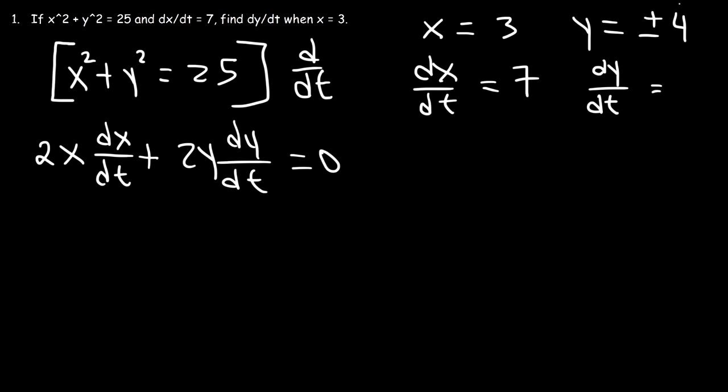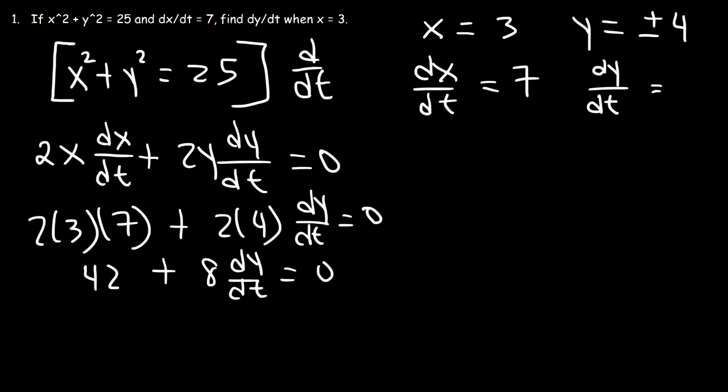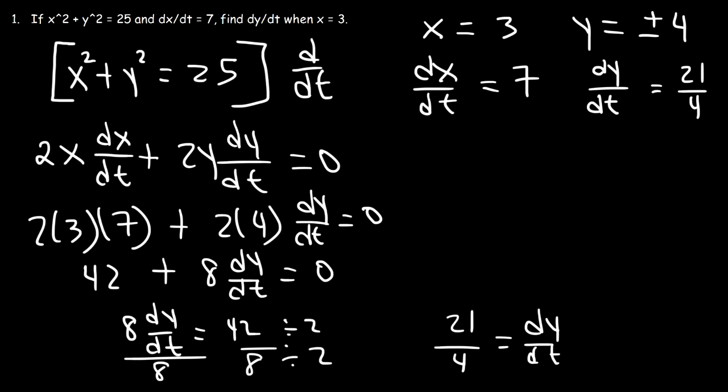Now, we can plug everything in into this equation and get the answer. Now, because there's two possible answers for y, let's try both. Let's try positive 4 for now. So x is 3, dx dt is 7, so that part won't change. y is going to be 4, and now let's see what dy dt is going to be. 2 times 3 is 6, and 6 times 7, that's 42. 2 times 4 is 8. And now let's move the 42 to the other side of the equation. So 8 dy dt is equal to 42. And then let's divide both sides by 8. Now, 42 over 8, if we divide by 2, this becomes 21 divided by 4. So dy over dt is equal to 21 over 4, when y is positive 4.